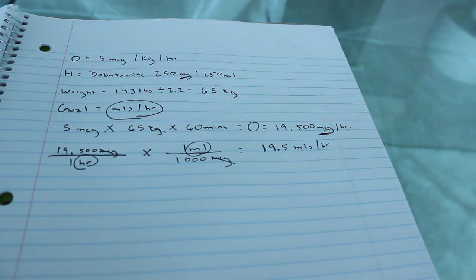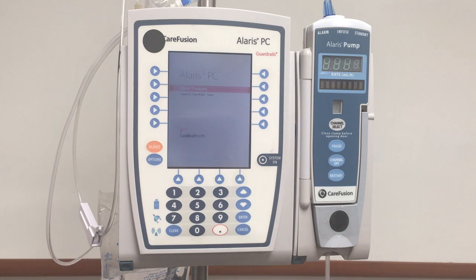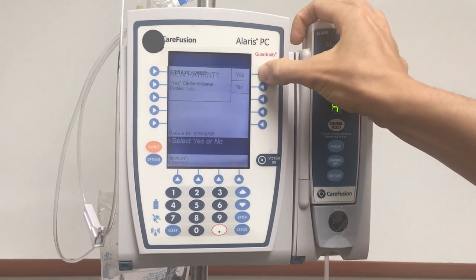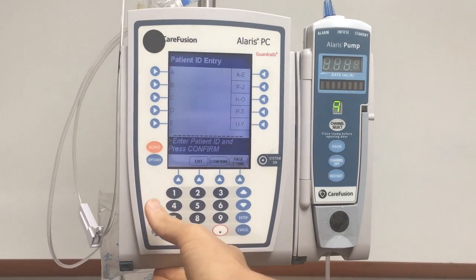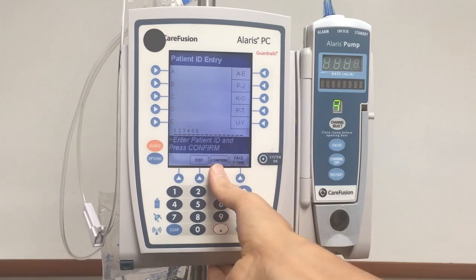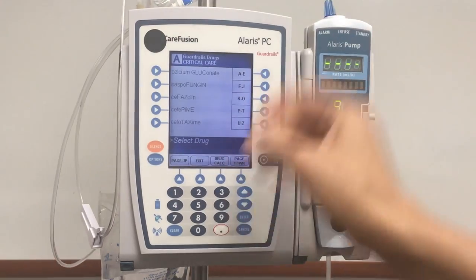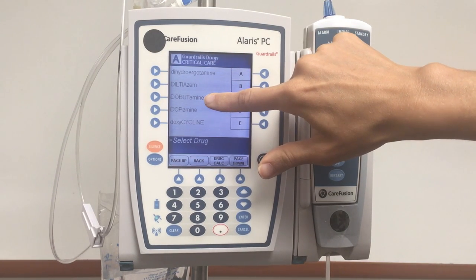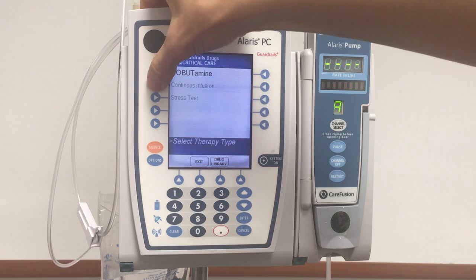So let's plug this into the IV pump. First, we need to turn the IV pump on. Give it a second to completely turn on. So we're going to say this is a new patient, and we are in critical care, so confirm that. Then we need to enter the patient's ID. Then we select the channel, and now we can select the medication. We can select alphabetically where we need to go. So we're looking for dobutamine, and you can see it. It is right there. I'm going to go ahead and select dobutamine, and we're going to do a continuous infusion.